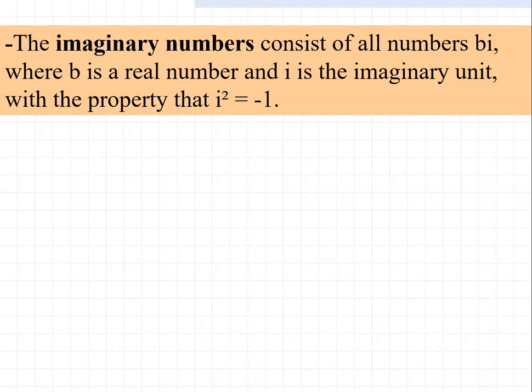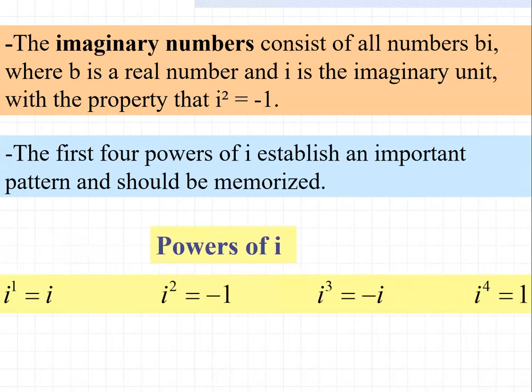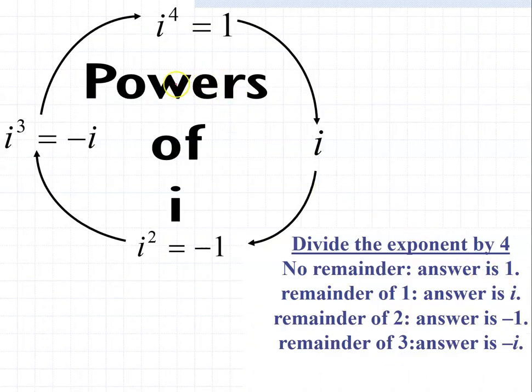The imaginary number consists of all numbers of the form bi, where b is a real number and i is the imaginary unit, with the property that i squared is equal to negative 1. There is a pattern for the powers or exponents of imaginary numbers. The four patterns to remember are: i to the power of 1 equals i, i squared equals negative 1, i cubed equals negative i, and i to the power of 4 equals 1.